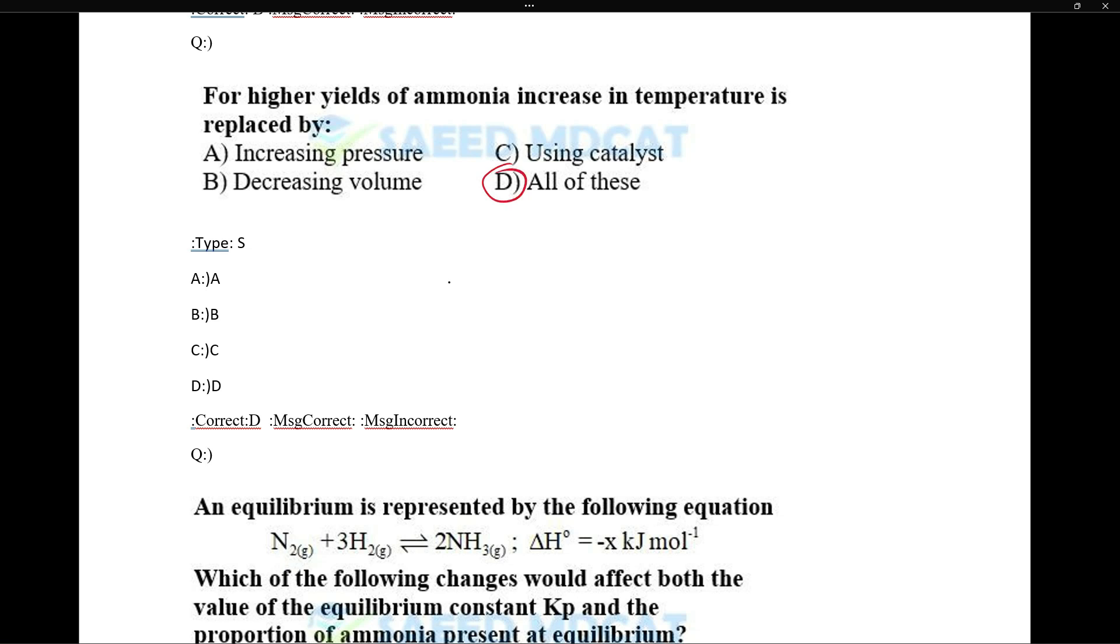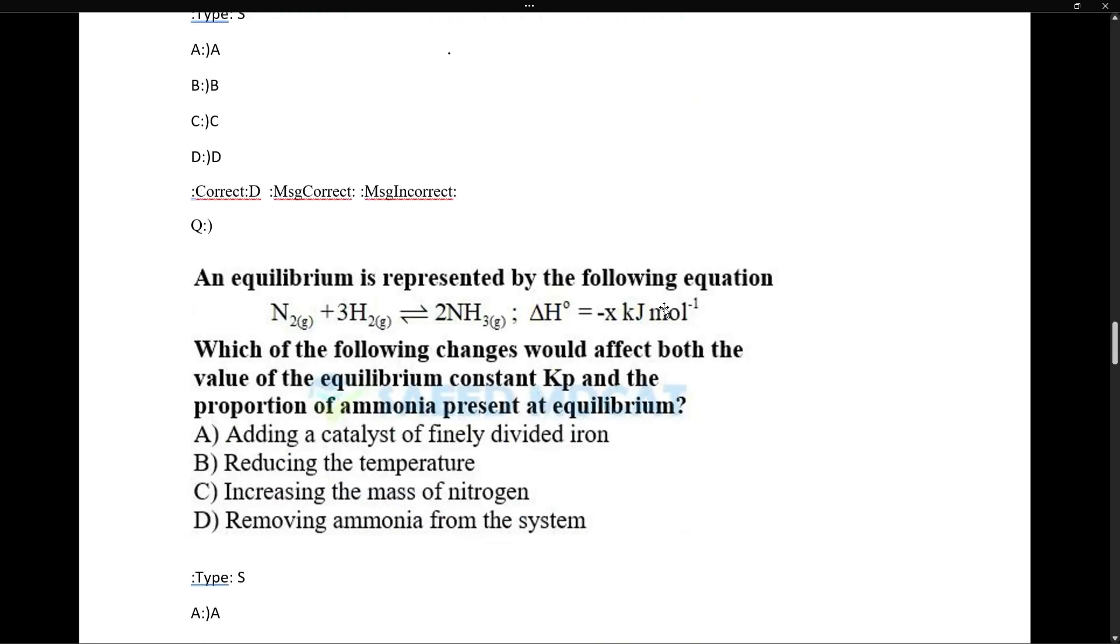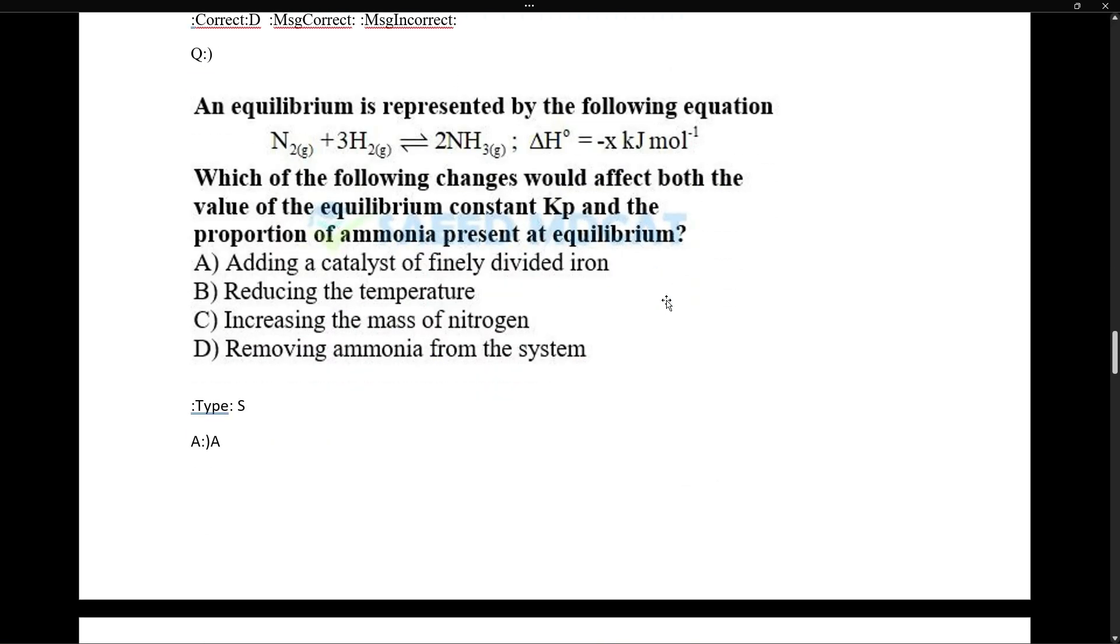We do this to increase the yield - increase pressure and reduce volume. Catalyst is used not to increase equilibrium but it helps us to achieve equilibrium earlier. This is the correct answer.